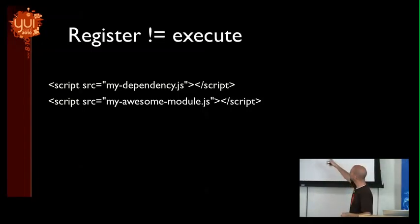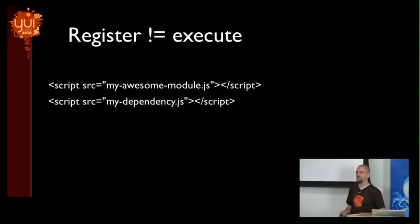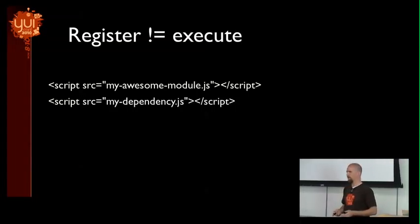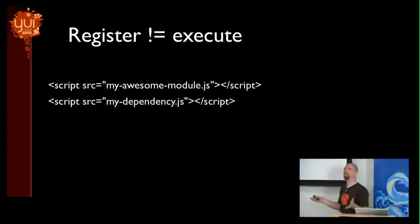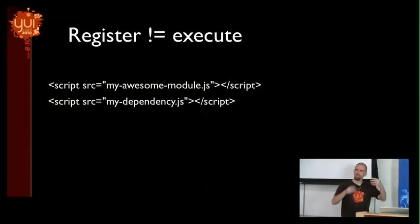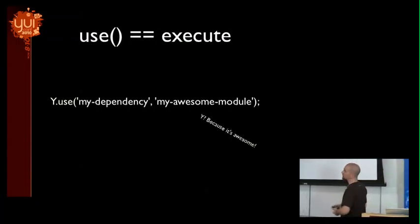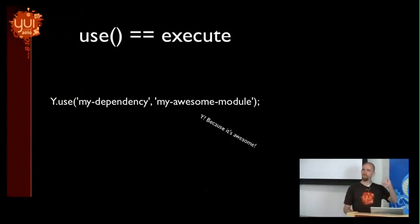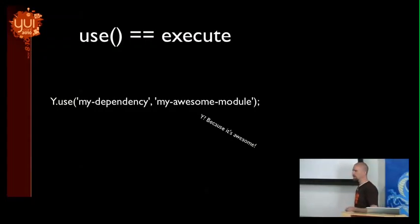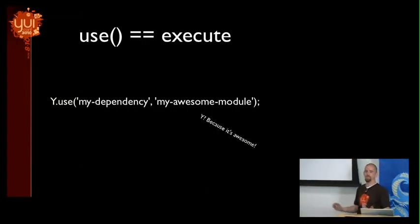YUI is that module registry system — this global YUI with no parentheses. It's the global module registry storing the function reference and assigning it a name. When you ask for 'my awesome module,' this is what you mean. That decouples the execution of that encapsulated logic from the loading of that logic. In the world of script tags, if the logic is not being executed, it doesn't matter what order they're in the source. You don't have to worry about things falling apart. But having the system register here and execute here gives you that control.